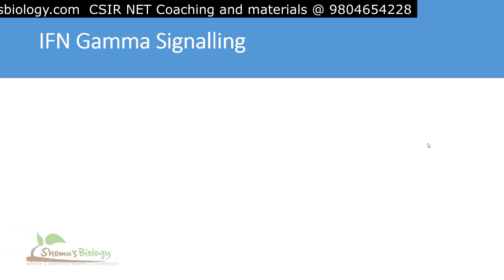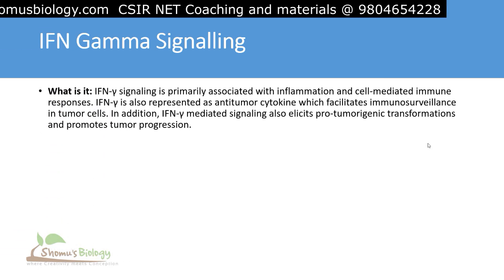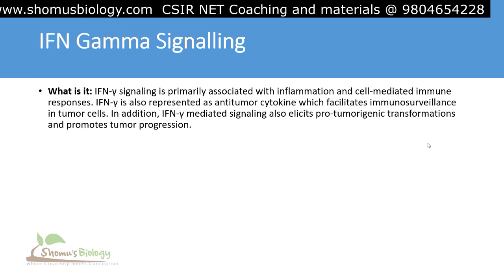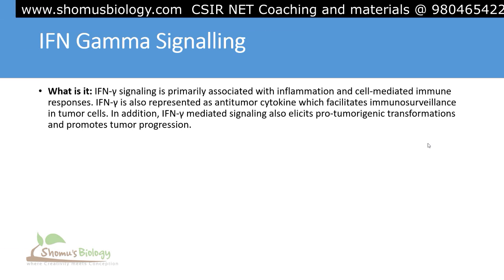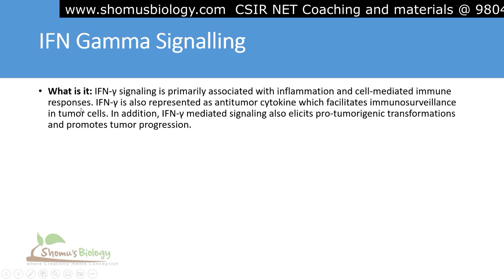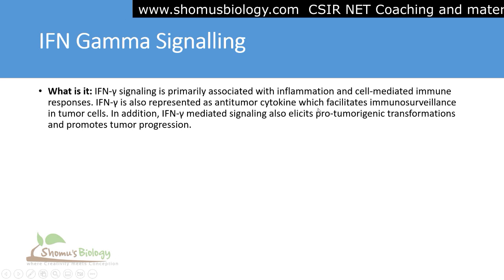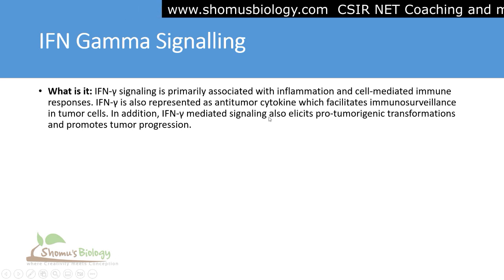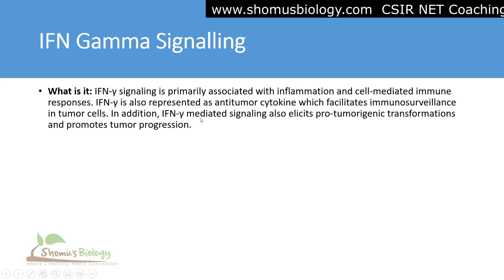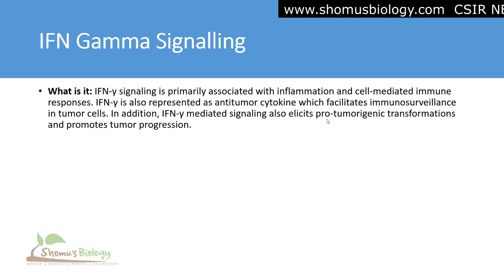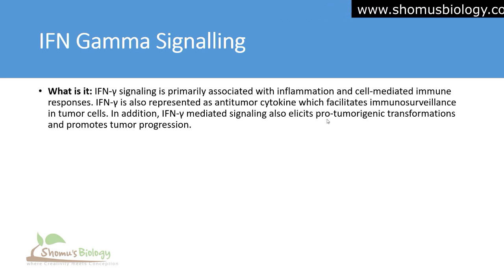We'll talk about the interferon gamma signaling. Interferon gamma signaling is primarily associated with inflammation and cell-mediated immune responses. Interferon gamma is also represented as an anti-tumor cytokine, which facilitates immunosurveillance in tumor cells. In addition, interferon gamma-mediated signaling also elicits pro-tumorigenic transformations and promotes tumor progression in the body. The interferon gamma is an important pathway which can lead to a normal cell's transformation to cancer.